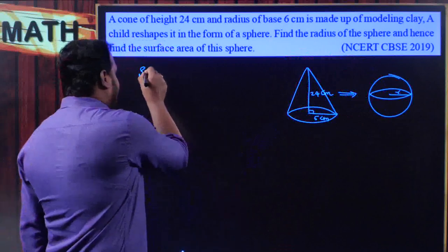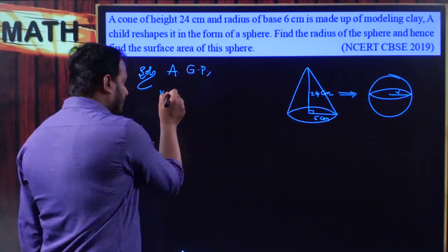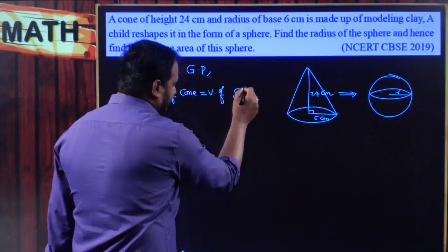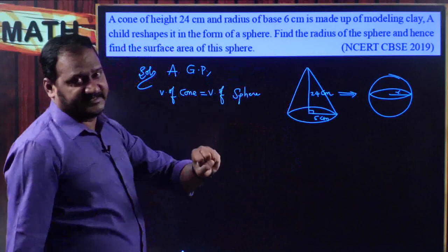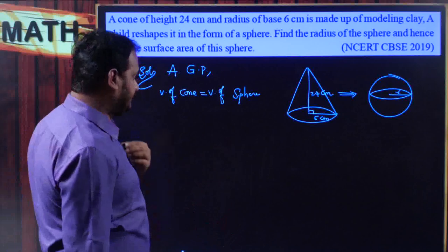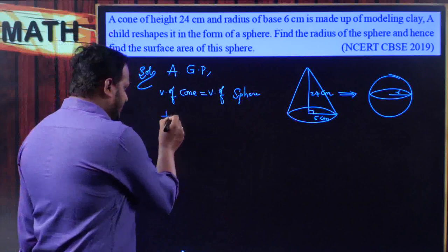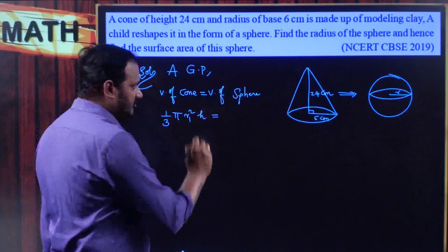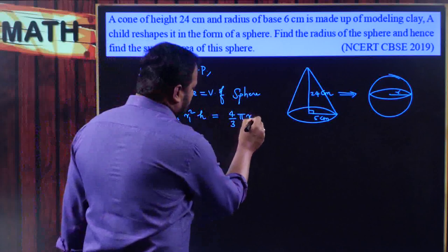According to the given problem, volume of the cone should be equal to the volume of the sphere. The sphere has only radius, and that radius and the cone's radius may or may not be the same, so I am going to use different letters: r1 and r2. The formula is: one-third π r1² h equals four-thirds π r2³.